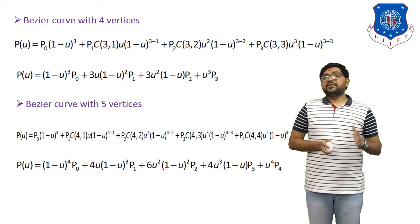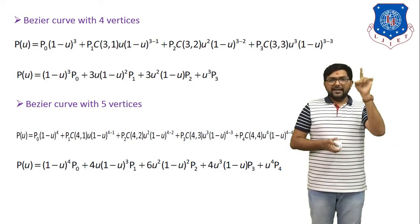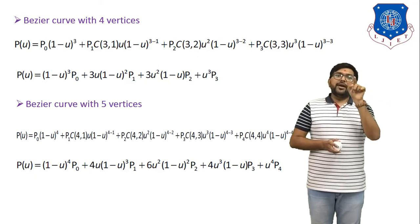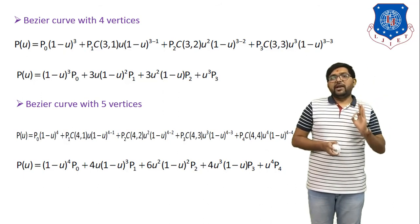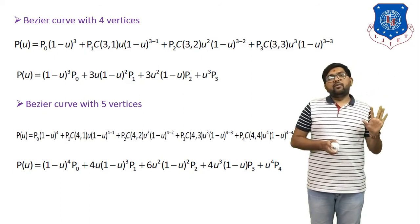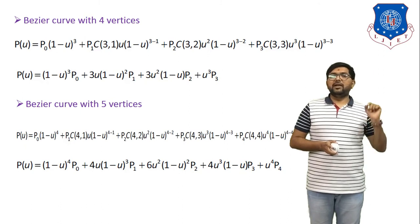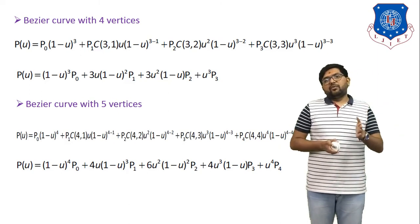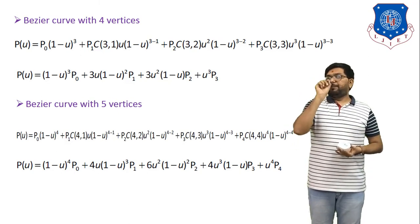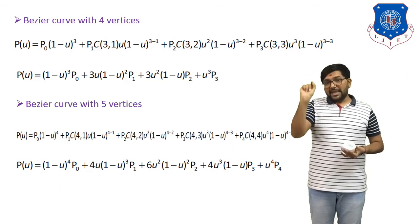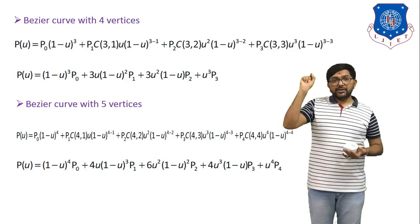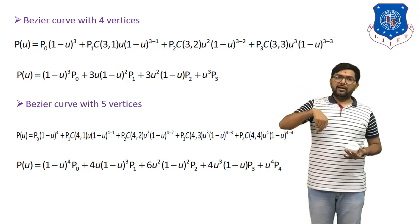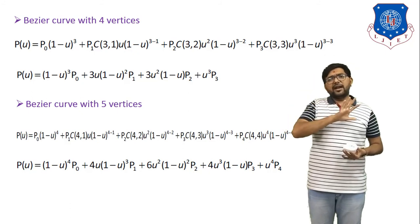You only need to remember one master equation: P(u) = Σ (i=0 to n) Pᵢ · C(n,i) · uⁱ · (1−u)^(n−i), where n = (number of control points) − 1. For example, 6 control points → n=5; 4 control points → n=3. From this single equation you can derive the Bezier curve for any number of vertices.